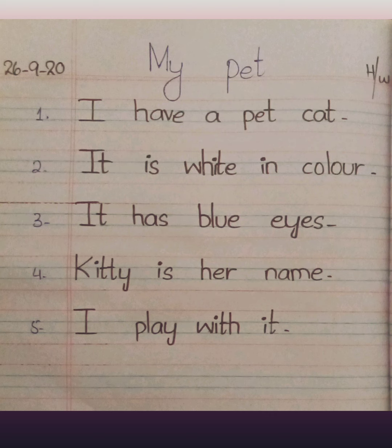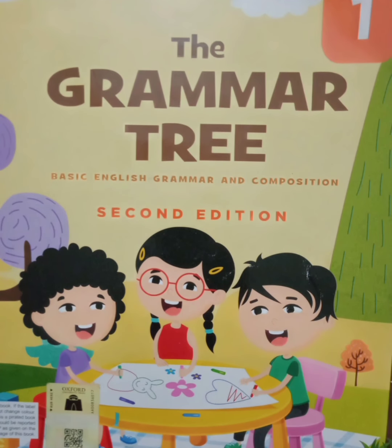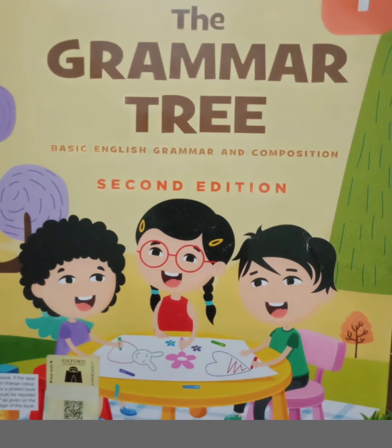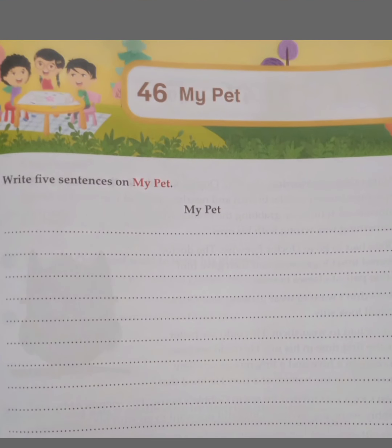Is that clear to all of you? Now move on to your Grammar Tree book. All kids, open your Grammar Tree book to page number 85. On page number 85, you have to write 'My Pet.' Write five sentences on my pet.